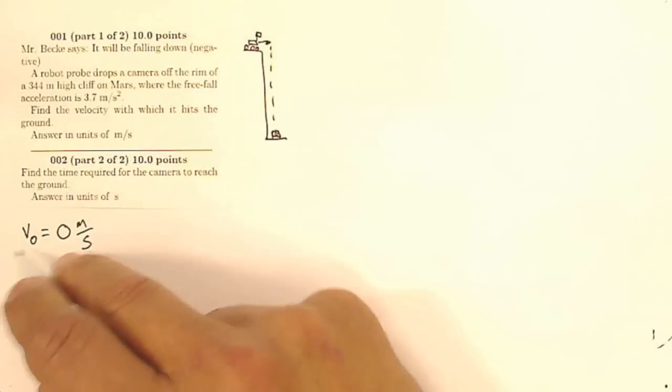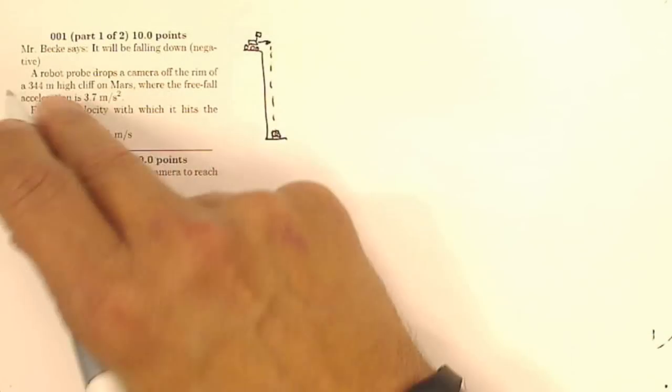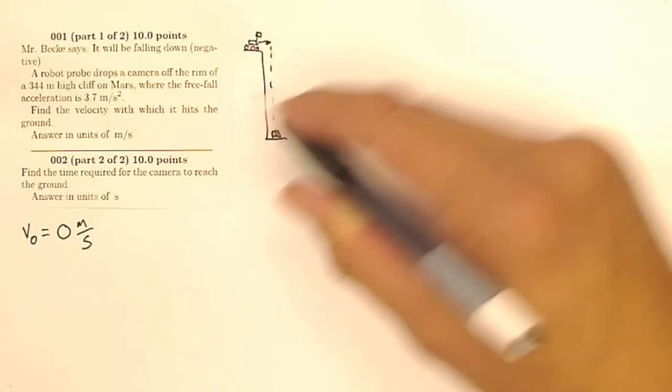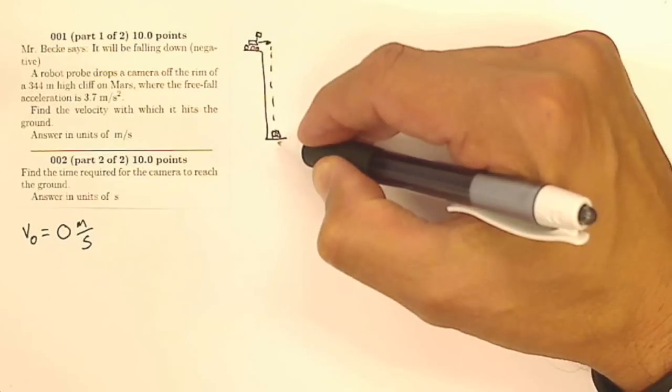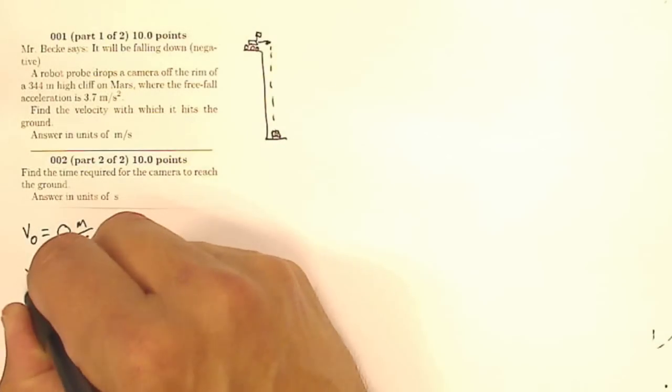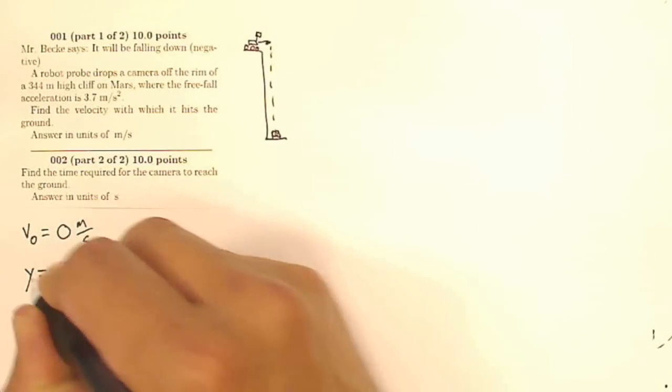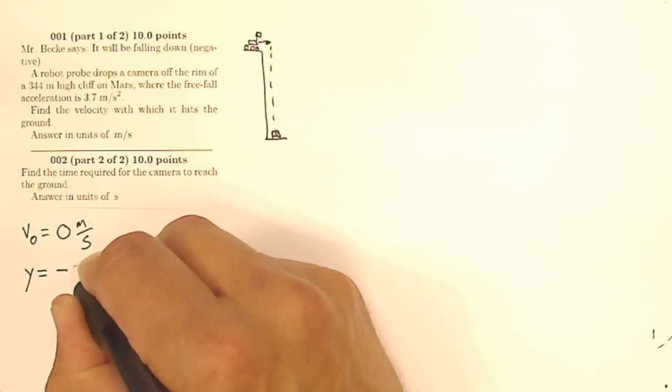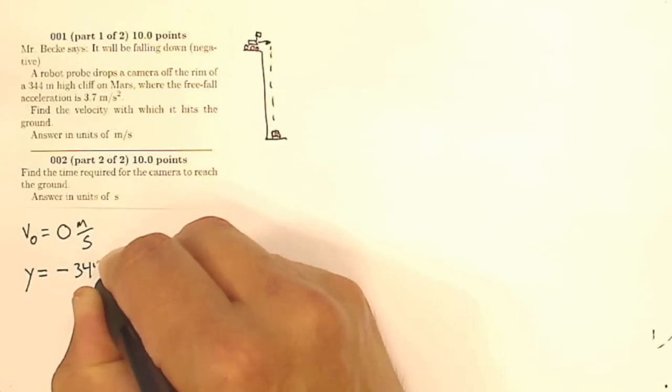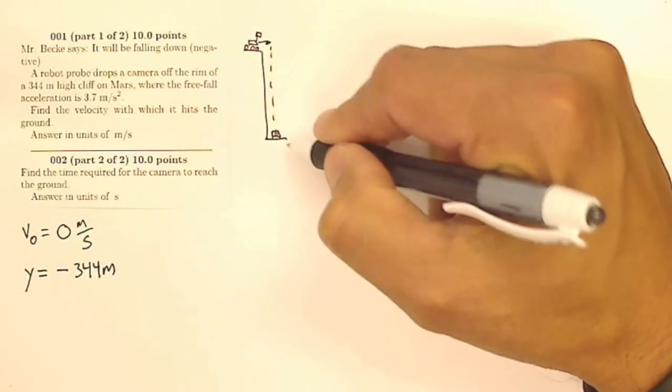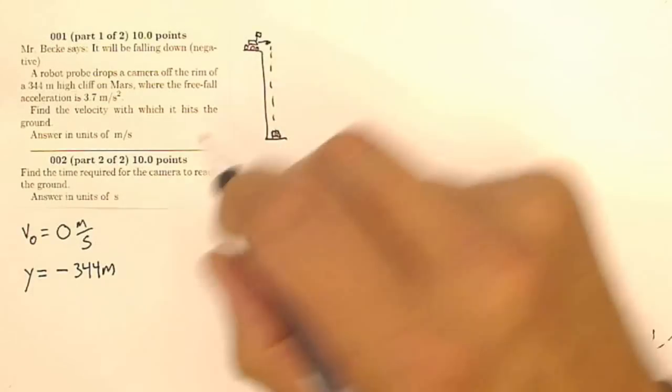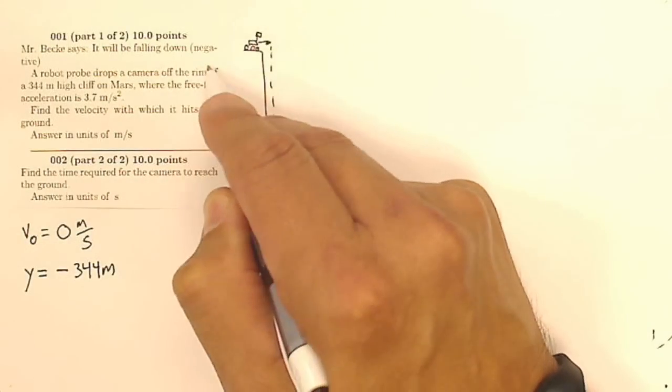So if he's going to drop a camera, its initial velocity is zero, and if it's a 344 meter high cliff, the displacement of that camera by the time it reaches the ground, I know that my Y displacement, my vertical displacement, is going to be negative 344 meters. It's going to go down 344 meters when it gets to the ground. That's why I say up here, it will be falling down, negative.